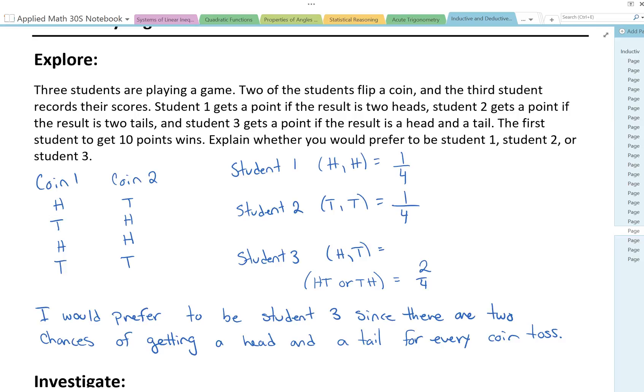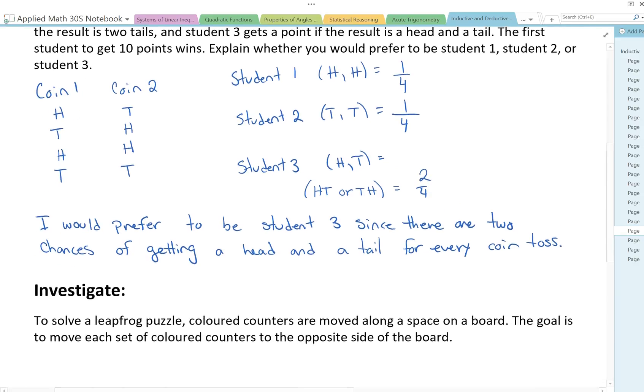So part of analyzing games and puzzles is sometimes figuring out all the possibilities. And this is one way of doing that. This is called a sample space when you're writing down all the possible outcomes. Let's take a look at another game.